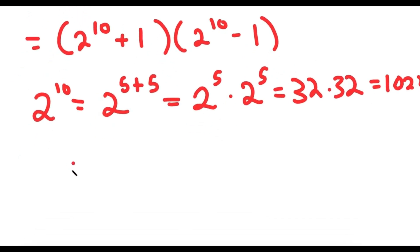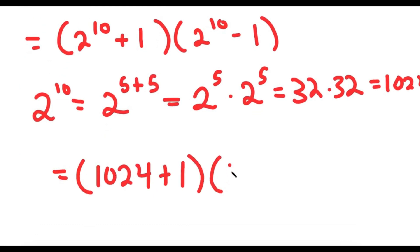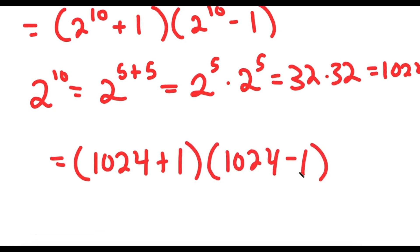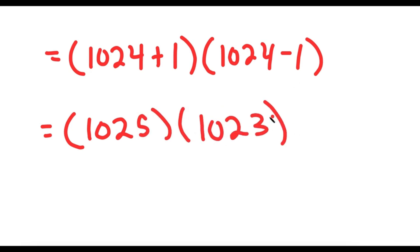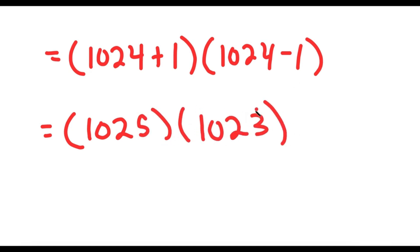So I get 1,024 plus 1, times 1,024 minus 1. Now, 1,024 plus 1 is 1,025, and 1,024 minus 1 is 1,023. So now I have 1,025 times 1,023.